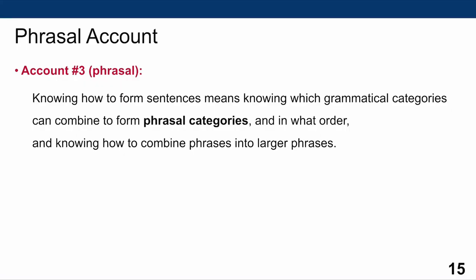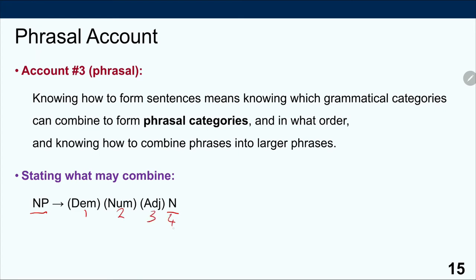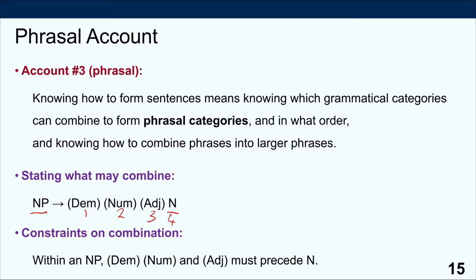What we need is an account that looks at whole phrases — at the phrase 'an apple,' at the phrase 'John and Sue,' and so on. Incorporating this, we arrive at a phrasal account: knowing how to form sentences means knowing which grammatical categories can combine to form phrasal categories, and in which order, and knowing how to combine phrases into larger phrases. A useful tool here is the phrase structure rule. For example, a rule for noun phrases (NP) says: NP → (Demonstrative) (Numeral) (Adjective) N, where the order of items encodes constraints — demonstrative, numeral, and adjective must precede the noun.